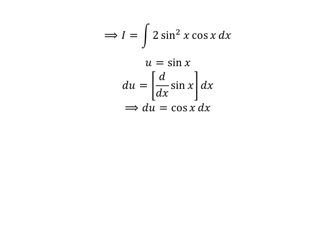As the derivative of sine of x is cosine of x, so differential of u is equal to cosine of x times differential of x.